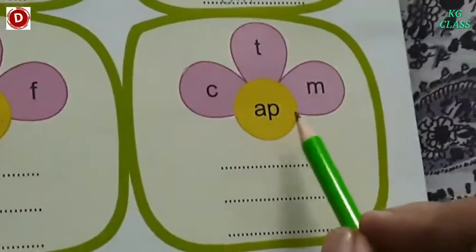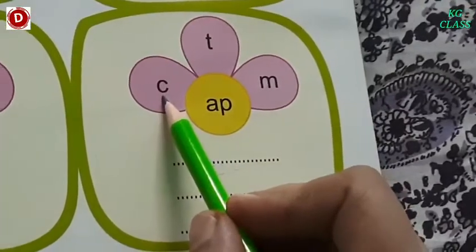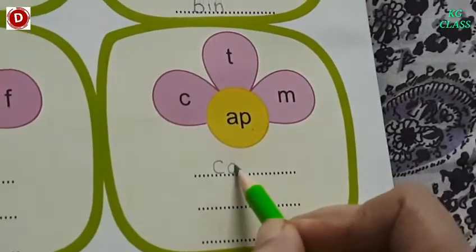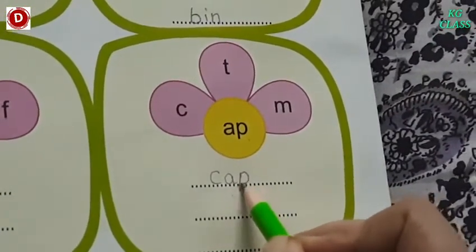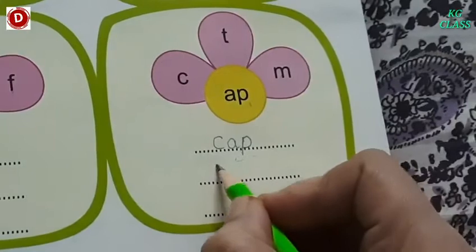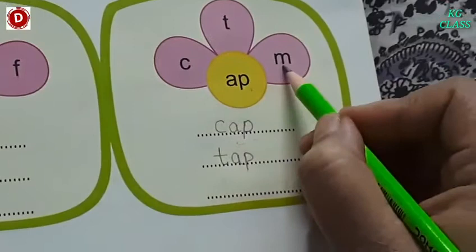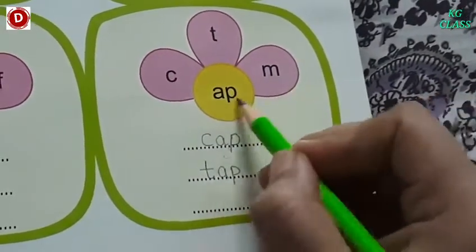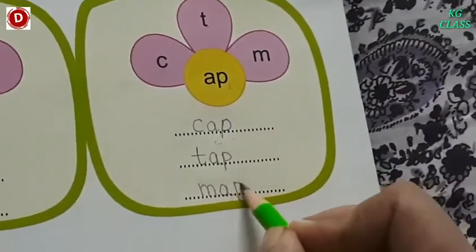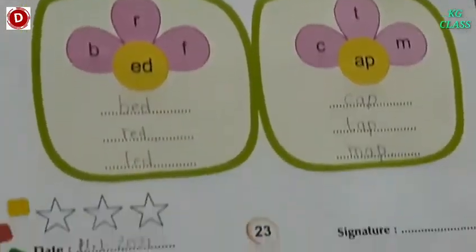Now the last one — A-P. C says 'k', so K-ap is 'cap' — cap means topi. T-ap is 'tap' — tap means nal. M-ap is 'map' — map means naksha. In this way, these three words are done.